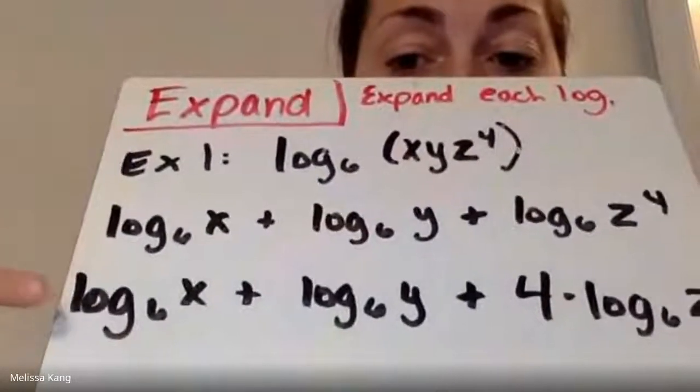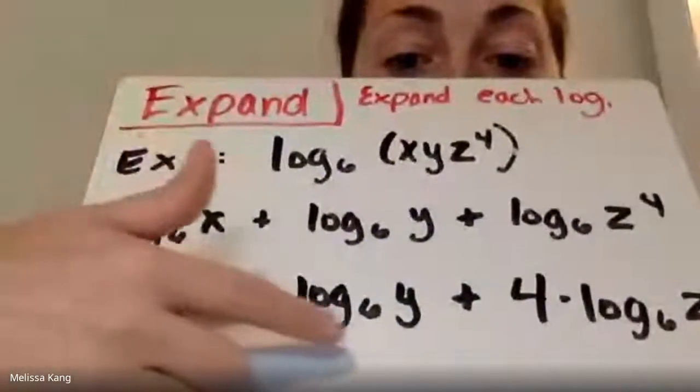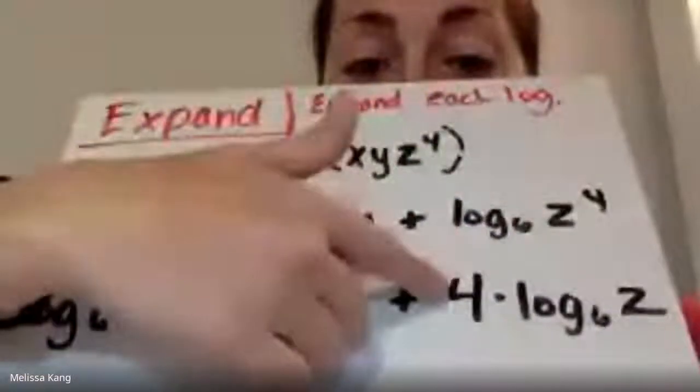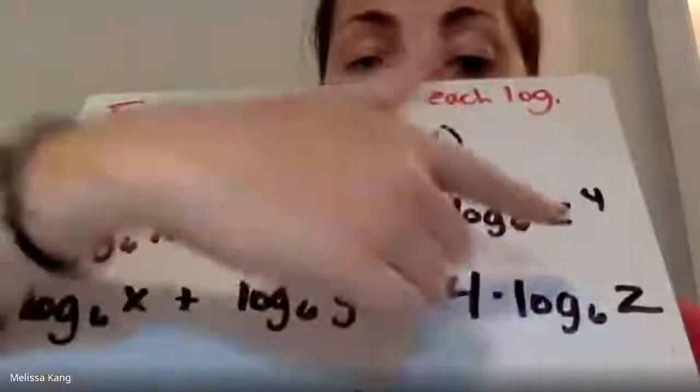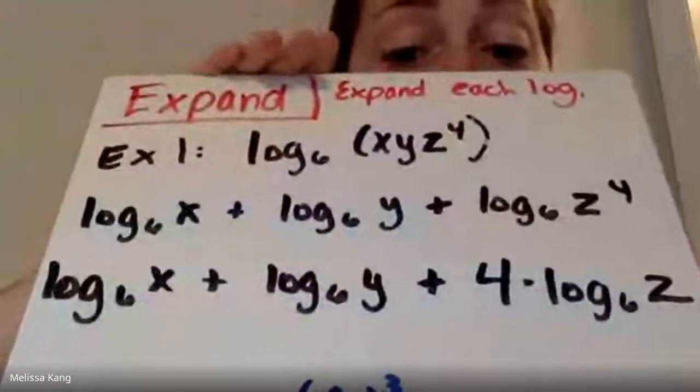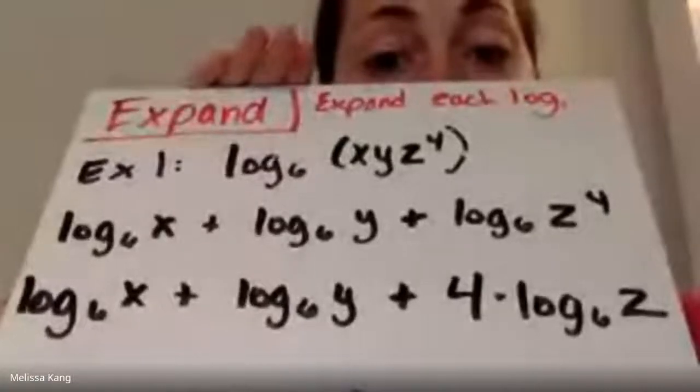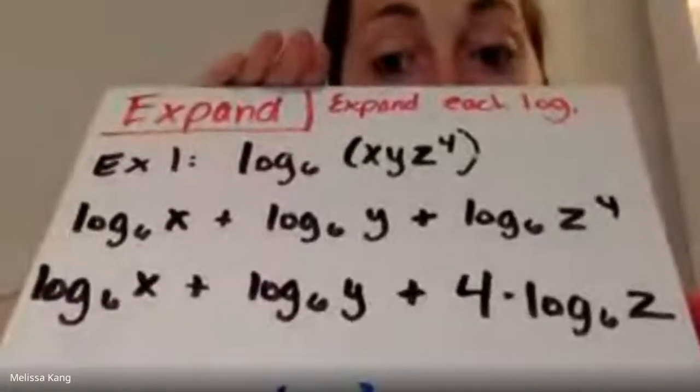Now we have to remember the product rule that just moves in front, right? So it moves it in front, and then my final answer: nothing changed. I have log base six of x plus log base six of y plus that four, that exponent moves in front, so it's four times log base six of z. That's it, guys. That's how we expand. I'm going to give you a second problem where, like I told you, you have an exponent outside.